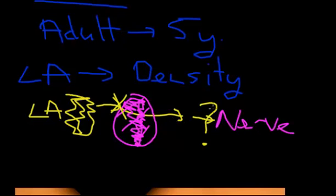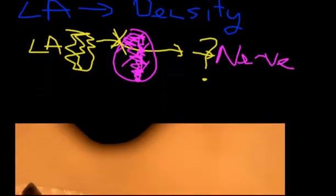So you've probably worked out what we're talking about here: depending upon the bone surrounding the nerves, it may change the opportunity for the local anesthetic solution to get to those nerves. So let's have a look at a little piece of bone — a cross section of bone.